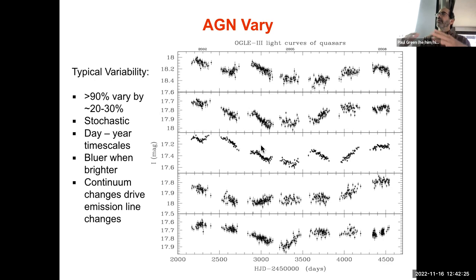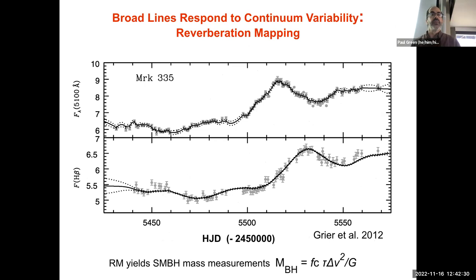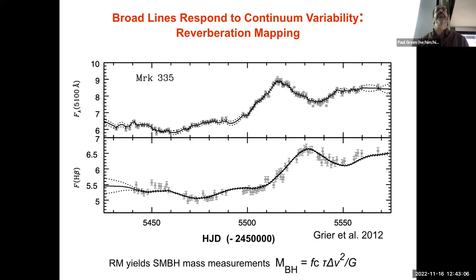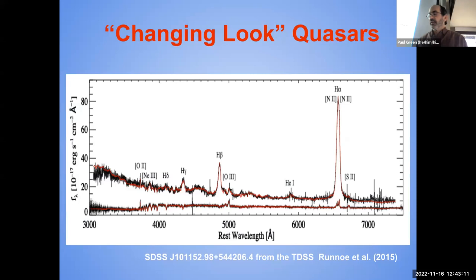That intense continuum drives emission line changes, and people have used the response of the broad line region to continuum variability to do reverberation mapping. Here's an example where the continuum flux varies over time for a Seyfert 1, and the broad H-beta flux varies in response with a lag. You can use that lag along with the width of the broad line to derive actual black hole masses using the virial theorem — it's proven to be very successful.